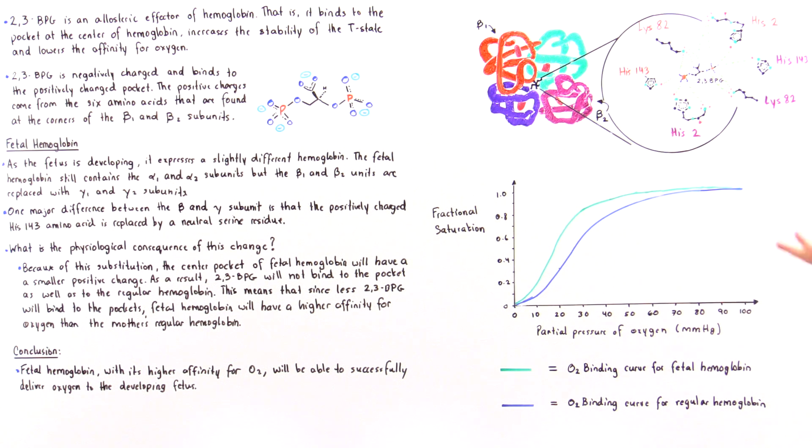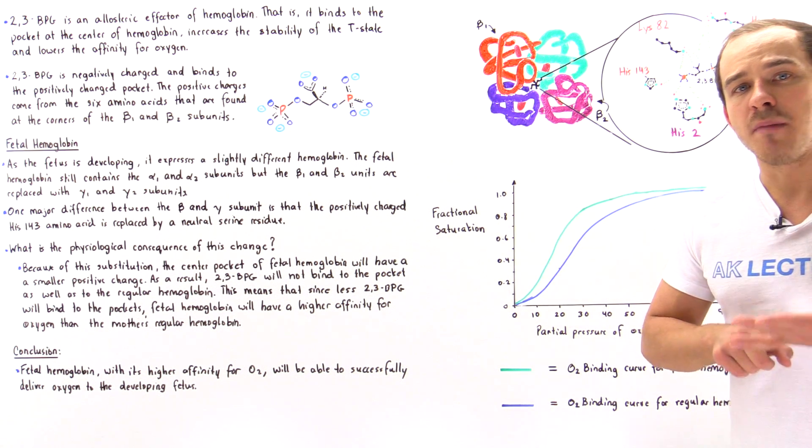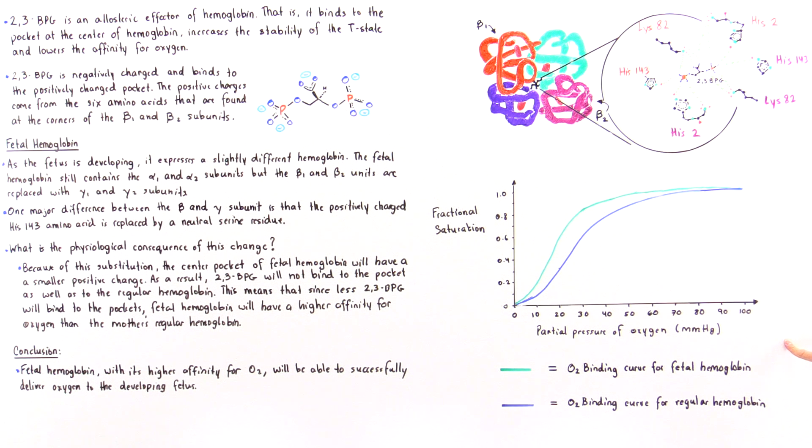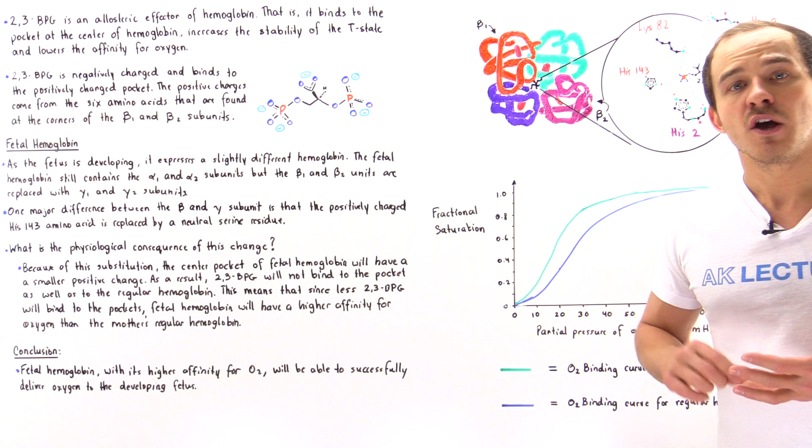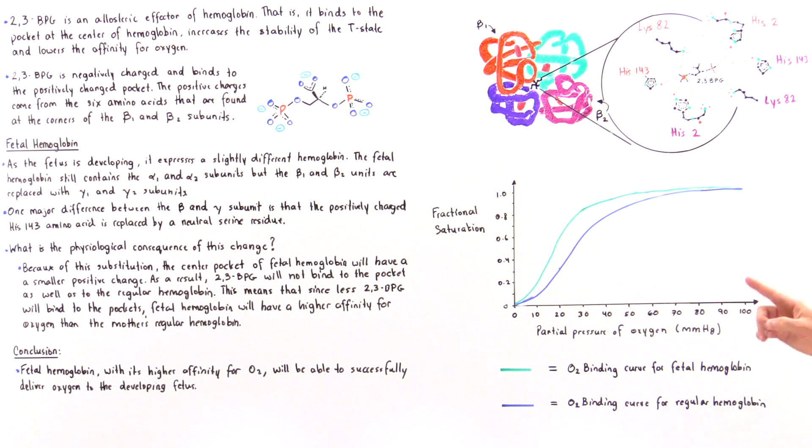If we examine the oxygen binding curve, we see that this green curve basically describes the oxygen binding curve for the fetal hemoglobin, while the blue curve describes the oxygen binding curve for the hemoglobin found in the mother's blood, the normal hemoglobin.